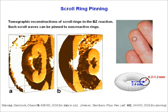In 2009, our group showed that scroll rings can be pinned to unexcitable non-reactive obstacles, and this pinning prevents the collapse and annihilation of the wave vortex.